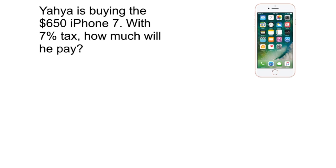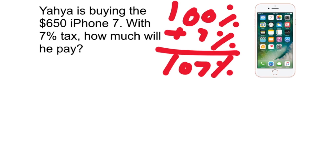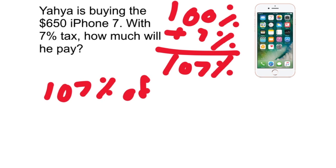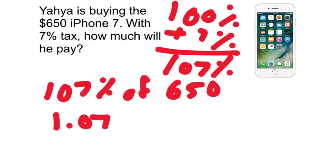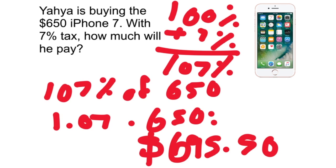If you'd like to do it in one step, think about it as wanting 100% of the price plus 7% tax, which is 107% total. So we find 107% of $650: one and seven-hundredths times 650, and in one step you find the price he needs to pay is $695.50.